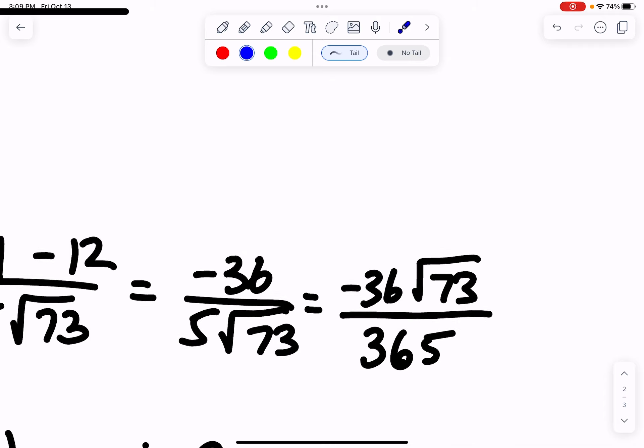To simplify this, I multiply the top by square root of 73 and the bottom by square root of 73. On the top, I get minus 36 square root of 73. On the bottom, square root of 73 times square root of 73 is 73 times five, which is 365. And there we have our answer.